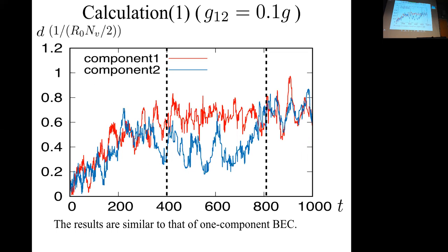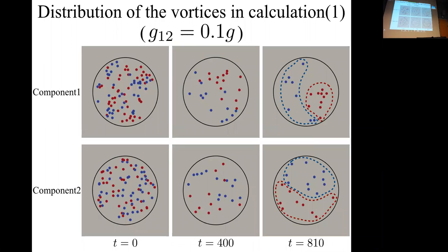I show the result of calculation one. The blue lines show the components of the dipole moment of component 1 and component 2. The distribution of vortices becomes clustered. With time development, the like-sign vortices cluster, and finally Onsager vortices are formed in both components, like in the one-component case. This is calculation one under the weak inter-component interaction condition.